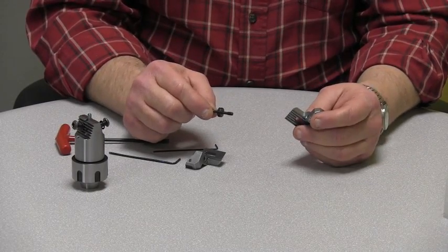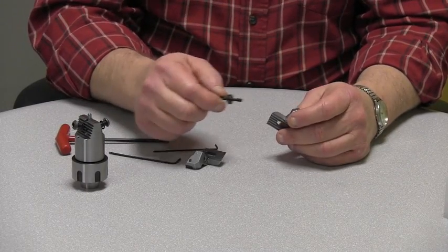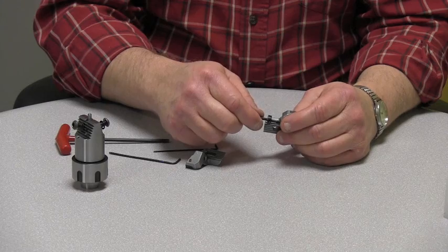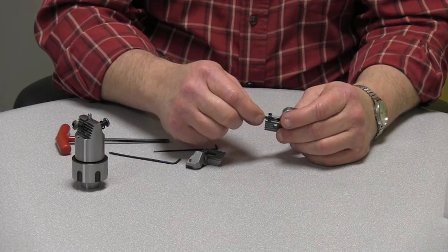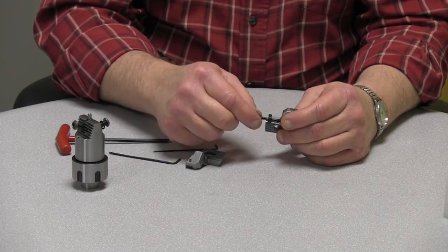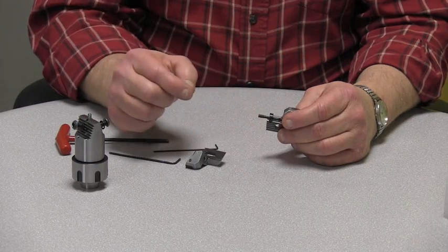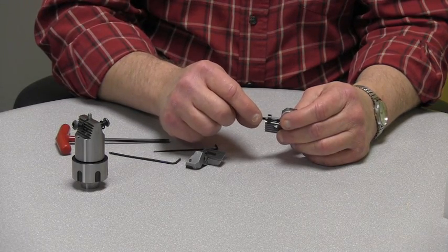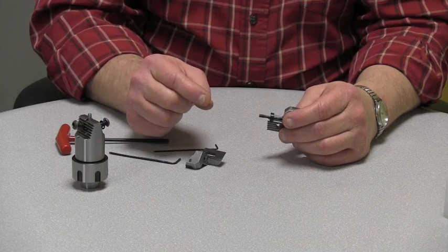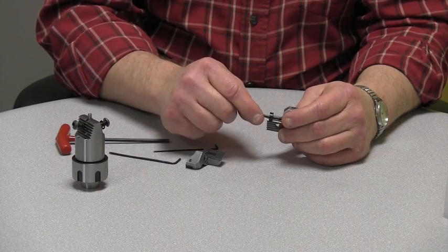Taking the left-handed blade with left-handed threads, you want to just get the thread started. At least maybe a three-quarter to a full thread. Just so it is able to stick out like that.